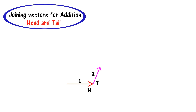Then I will take the third vector and join the tail of the third vector with the head of the second vector. This is the head and tail rule for joining vectors for addition.